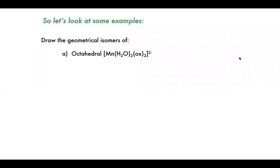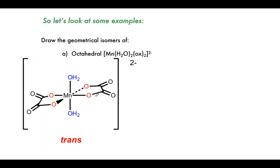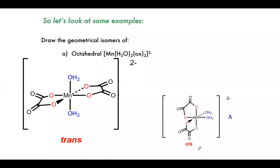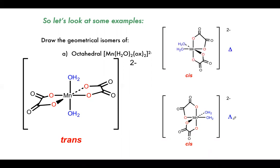Let's draw the geometrical isomers of the octahedral complex aquadioxalatomanganese. For the trans complex, the bidentate oxalate ligands are opposite each other and the water ligands are also opposite each other. For the cis version, the water ligands are beside each other, and the cis isomer can additionally exhibit optical isomerism: the lambda isomer (anti-clockwise rotation) and the delta isomer (cis, clockwise rotation — the right-handed rotational isomer).